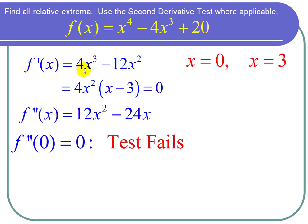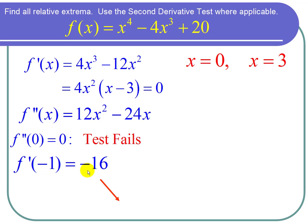So to the left of zero, it's decreasing. Now I plug in a number a little to the right of zero, like 1. If I plug in 1, I get 4 minus 12 is negative 8. We can see it's still decreasing.